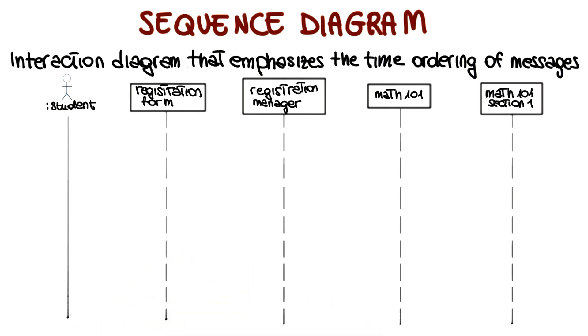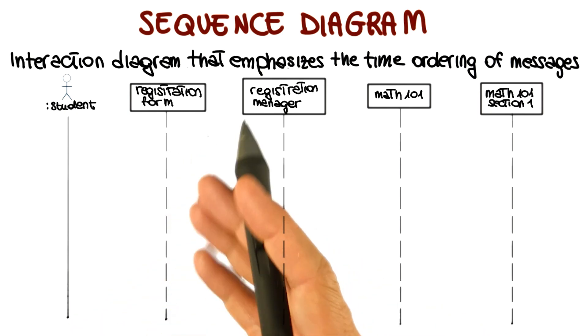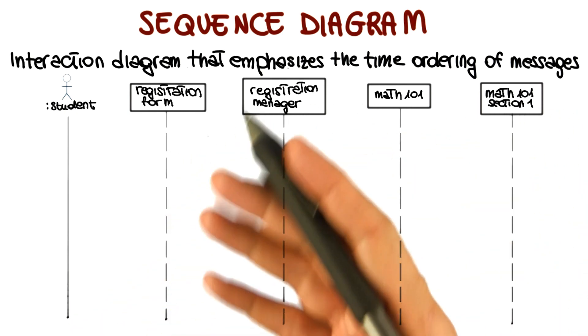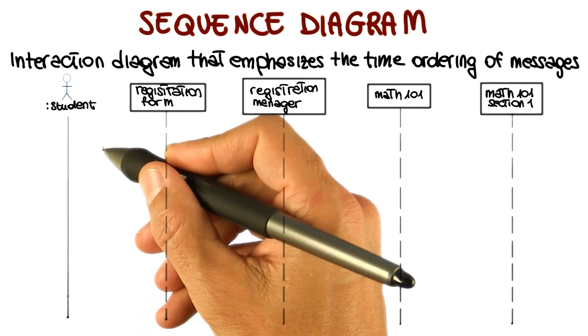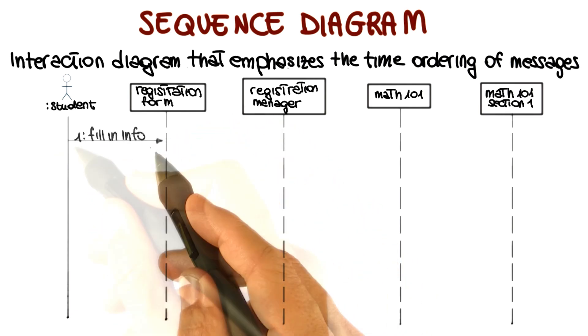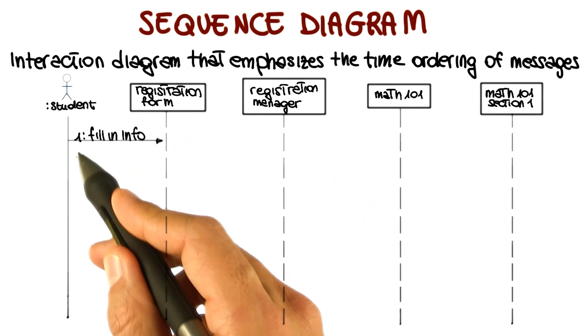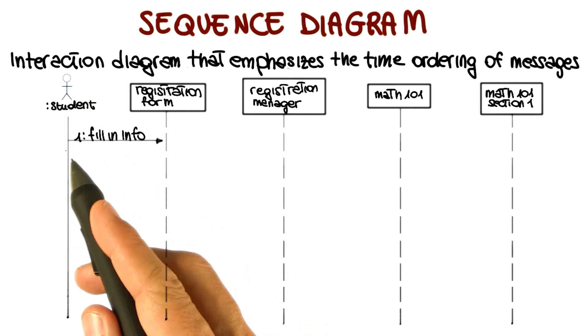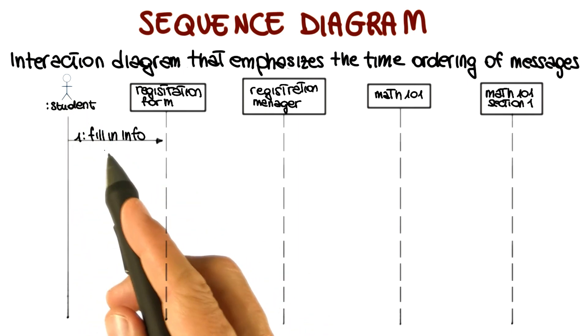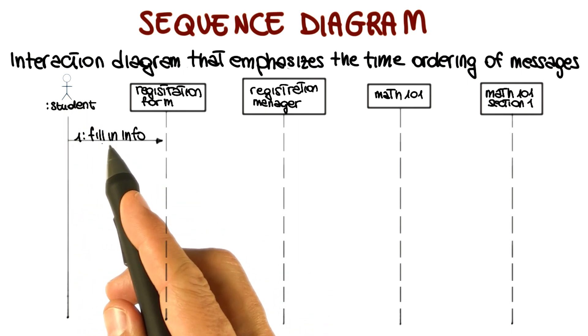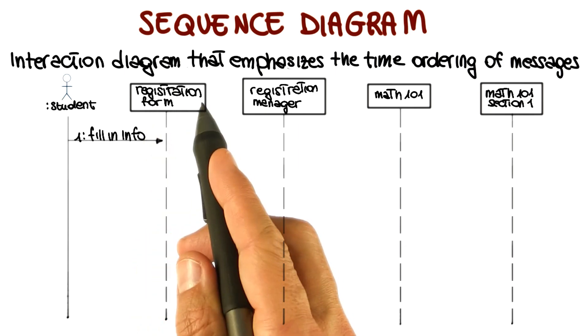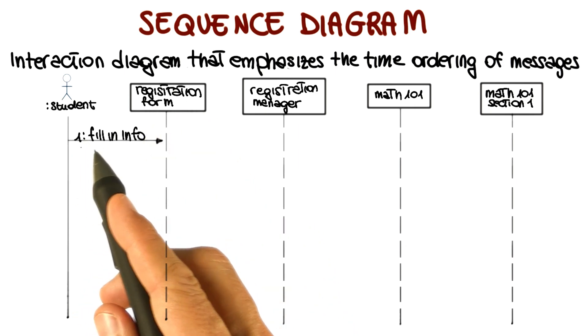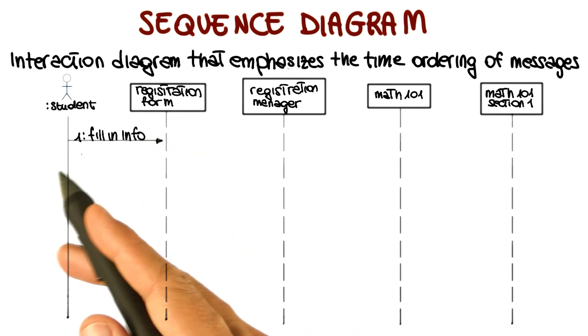Now that you have your object lifeline, you can start placing messages that these objects send and receive. You want to put them along the y-axis in order of increasing time, from top to bottom. You can also put a number on the message to further clarify the sequence. In this case, what we are showing is that the student will send a fill in info message to the registration form. This is the first message in the sequence diagram, the first interaction.